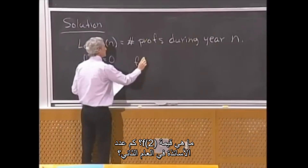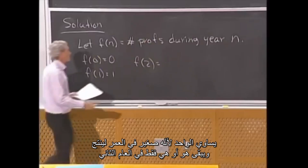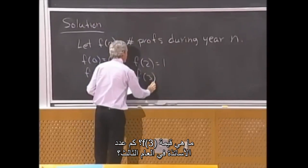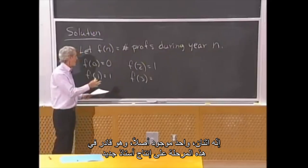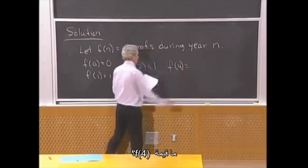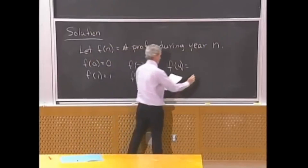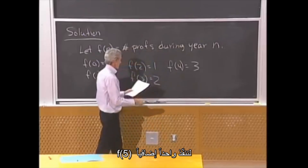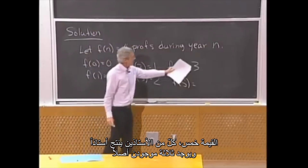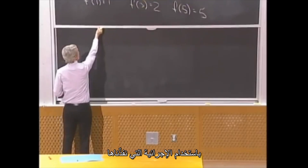Let's define f(n) to be the number of professors during year n. In year zero there were none; in year one there was one. f(2) equals 1, because the one professor was too young to produce anyone. f(3) equals 2: the original professor is now old enough to produce a new one. f(4) equals 3: the two professors present in year 3 produce one new one. f(5) equals 5. So we can write down the recurrence: for n ≥ 2, f(n) = f(n−1) + f(n−2), where f(n−2) counts the new professors generated.